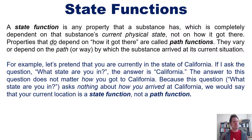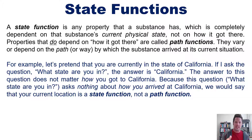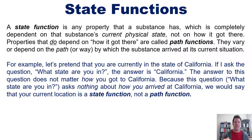For example, let's pretend that you are currently in the state of California. If I ask you the question, what state are you now in, the answer is California. The answer to this question does not depend on how you got to California. Because this question asks nothing about how you arrived at California, we would say that your current location is a state function, not a path function.